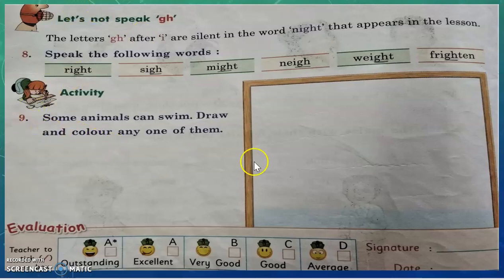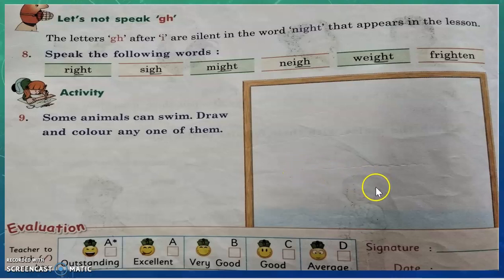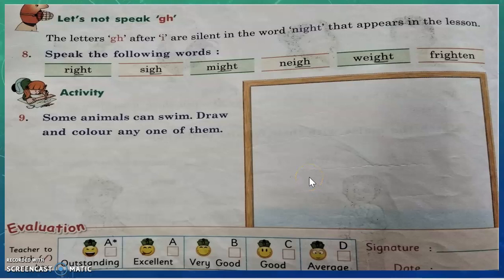In question number nine, you have to draw an animal which can swim in water — like you can draw a fish or a picture of a duck, and afterwards you have to color it also. I hope you have understood this lesson and the exercises. Please complete all these questions in your semester book. Thank you children, bye-bye.